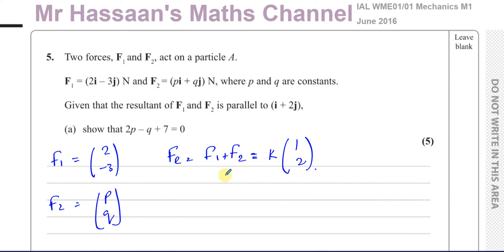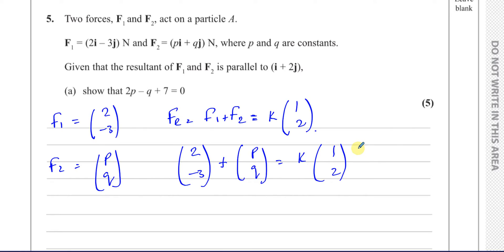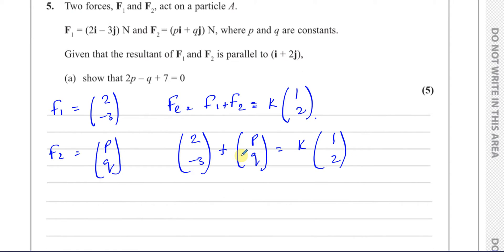So for part A, it says show that 2P minus Q plus 7 equals 0. You can set an equation up from this fact that F1, which is (2, -3), plus F2, which is (P, Q), is equal to some constant K times (1, 2). From here we can set up a pair of equations and combine them together.